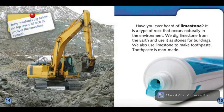Have you ever heard of limestone? It is a type of rock that occurs naturally in the environment. We dig limestone from the earth and use it as stones for buildings. We also use limestone to make toothpaste. Toothpaste is man-made.